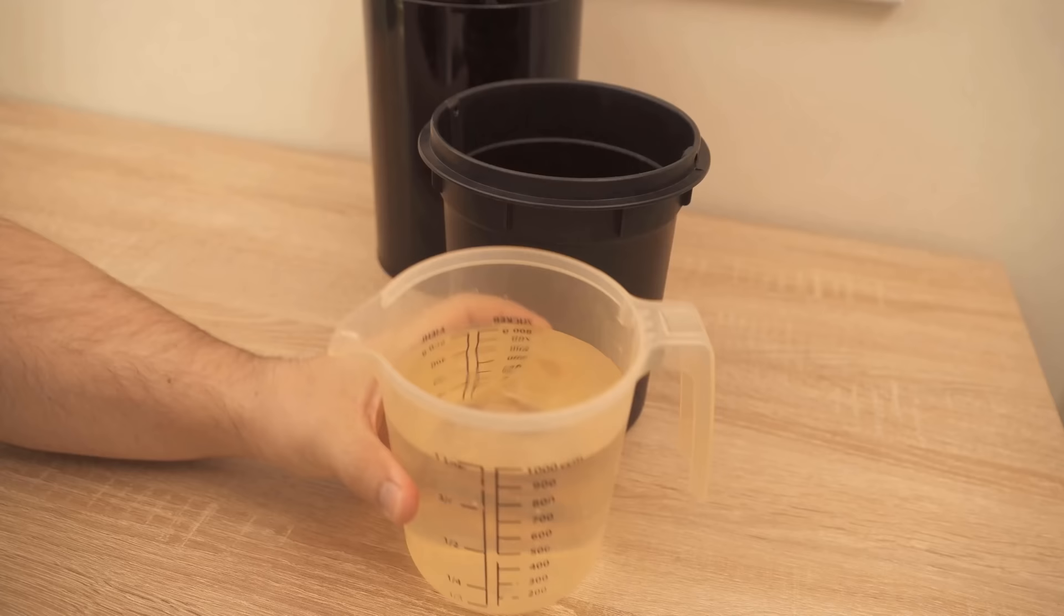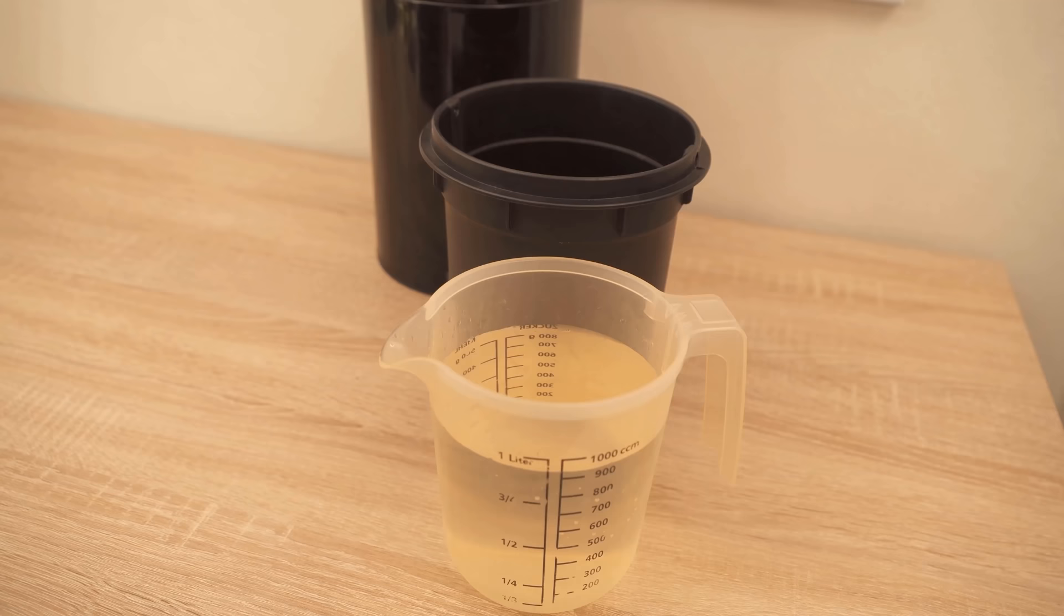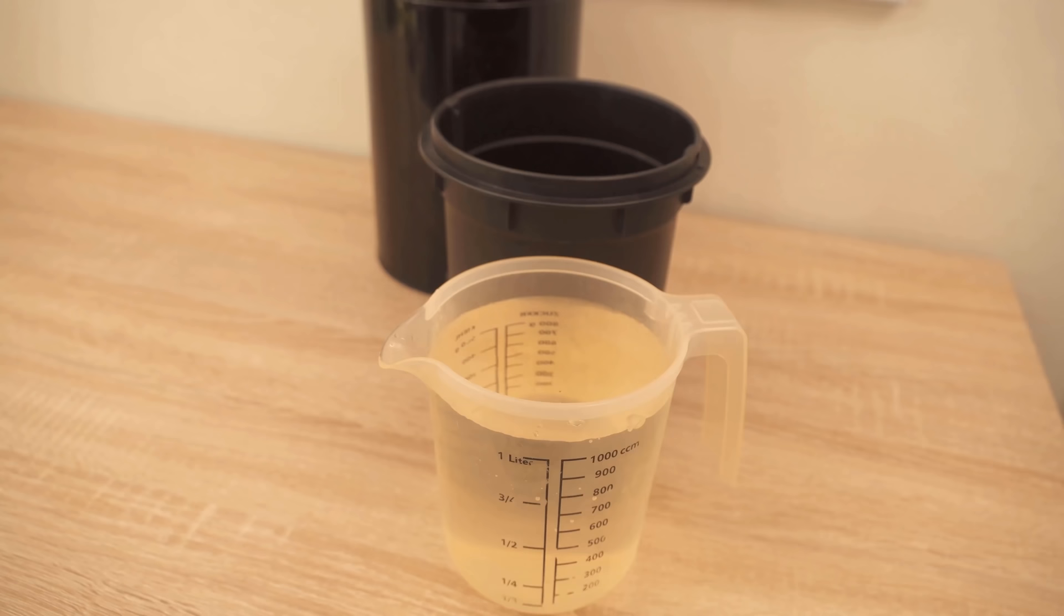To clean the trash can, we now make a cleaner from some water and vinegar. I have here one liter of water and add half a cup of vinegar. Then make the trash can with this cleaner completely clean.